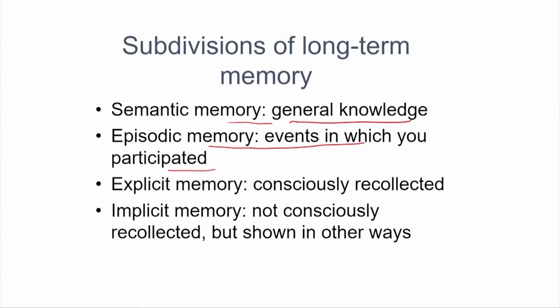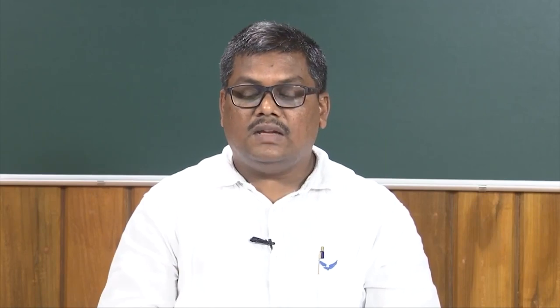Semantic and episodic memory are both called explicit memory because when you remember them, you are conscious about it — you consciously think about it. When you think about an apple, you are consciously searching your long-term memory. If asked to differentiate between an apple, an orange, and a mango, you consciously do this task. Similarly, if asked to tell me about your farewell or your first day in college, you consciously relate events of what happened — you are aware and interacting with that particular memory.